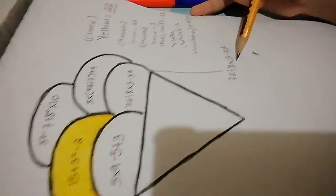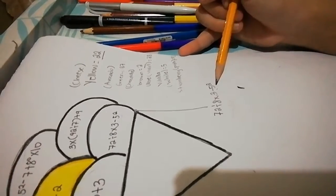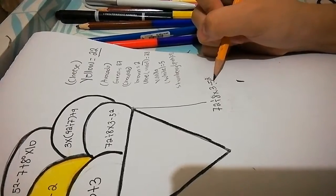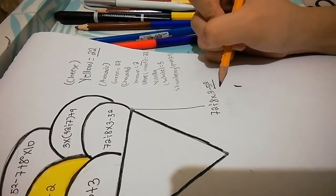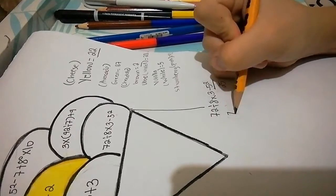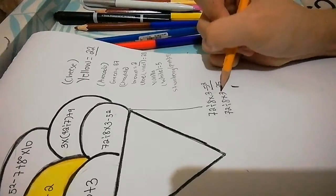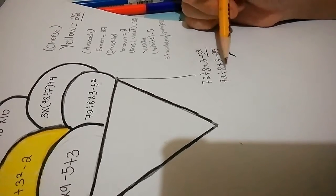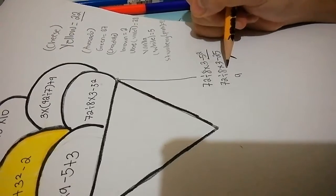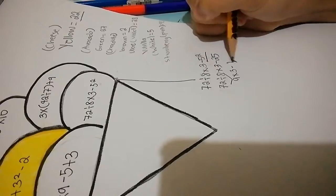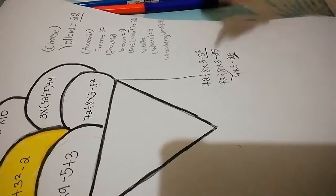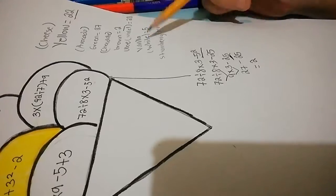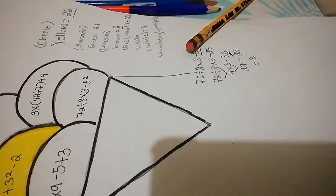72 divided by 8 times 3 minus 5 to the second power. We have 5 to the second power, that's exponential, so we do 5 times 5 equals 25. Then 72 divided by 8 is 9. 9 times 3 is 27. 27 minus 25 equals 2. So 2 is brown.